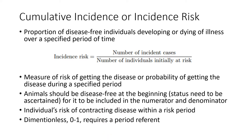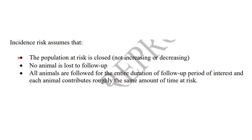There are several assumptions when calculating incidence risk. First, the population at risk is closed — not increasing nor decreasing. Second, no animal is lost to follow-up. Lastly, all animals are followed for the entire duration of the follow-up period and each animal contributes roughly the same amount of time at risk. This is important because everyone who becomes sick in the numerator must have been part of the denominator.